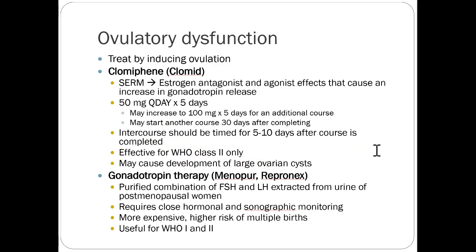Gonadotropin therapy is a purified combination of follicle-stimulating hormone and luteinizing hormone, extracted from the urine of postmenopausal women. It requires more monitoring, is more expensive, has a higher risk of multiple births, and is useful for both class one and class two. Essentially, this directly gives you an increase in hormones — so if the body's own process isn't functioning even with estrogen receptor modulation, you can still give the actual hormone itself and hopefully induce ovulation.